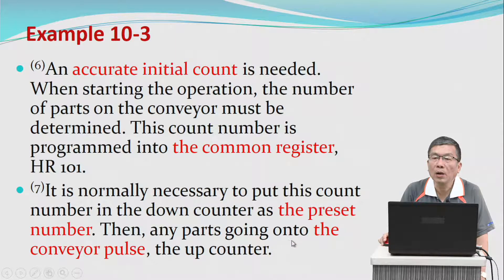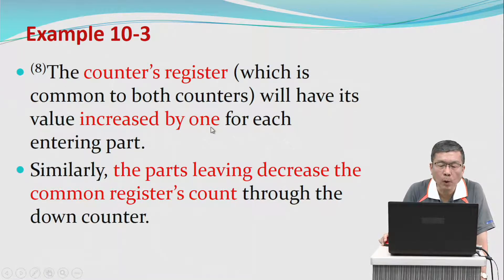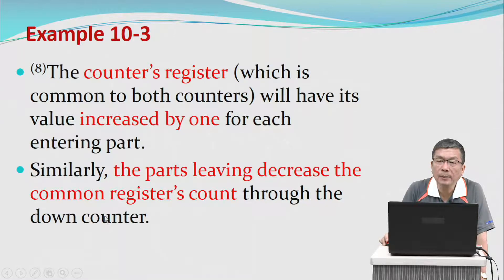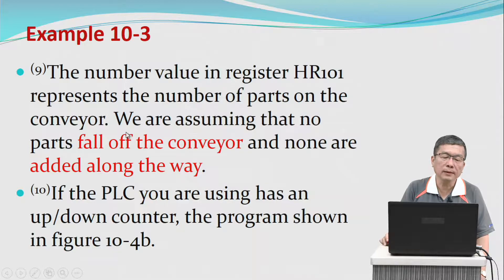It is normally necessary to put this count number in the down counter as the present number. Any part going on to the conveyor increments the up counter. The counter register, which is common to both counters, will have its value increased by one for each entering part. Similarly, each part leaving decreases the common register count through the down counter. The value in holding register 101 represents the number of parts on the conveyor.